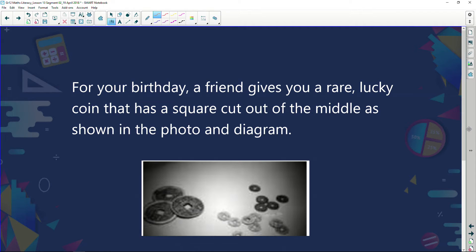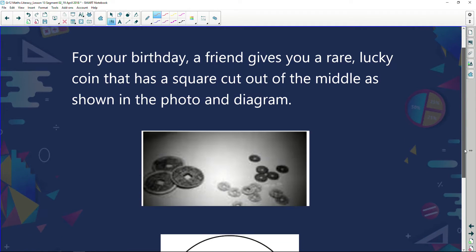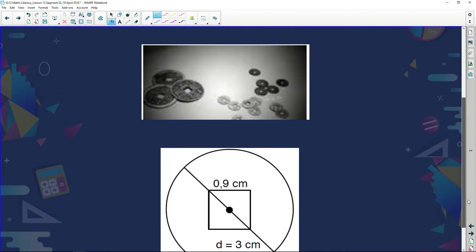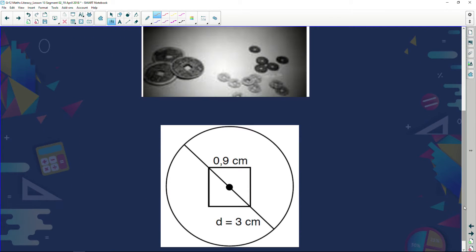Now, for your birthday, a friend gives you a rare lucky coin that has a square cut out of the middle, as shown in the photo and diagram. So there's the photo, the photo is not 100% clear, but here's a nice diagram of it. And so you can see you've got this lovely lucky coin, and they've cut out a little square in the middle of that coin.